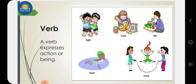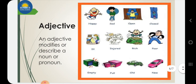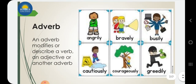Adjective modifies and describes a noun or pronoun. Adjective describes the noun or pronoun — like sad, tall, happy, open, closed, injured, rich, poor, empty, full, old, new, sweet, yellow — these are all your adjectives, which describe the quality or quantity of a noun or pronoun.